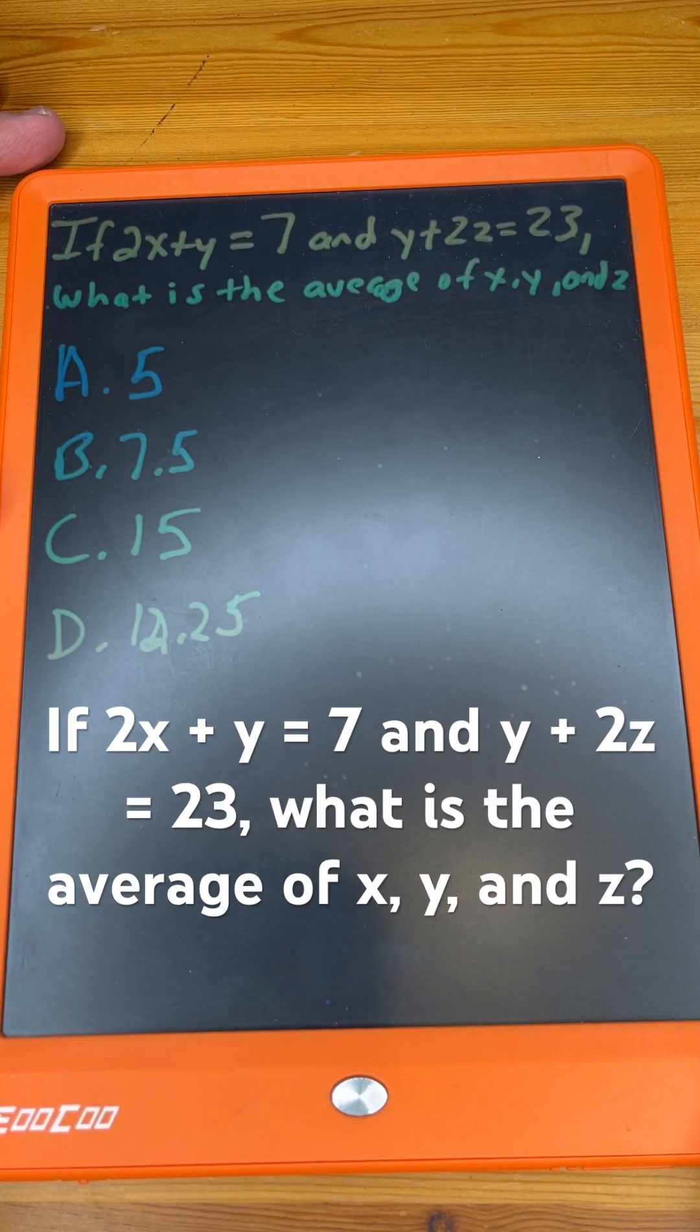If 2x plus y equals 7 and y plus 2z equals 23, what is the average of x, y, and z?